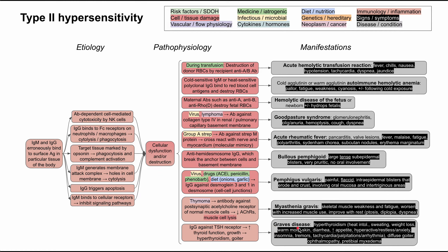Graves' disease is another type 2 hypersensitivity reaction. In this case, you have IgGs against the TSH receptor, which actually stimulates thyroid function and can cause thyroid growth. The result is hyperthyroidism and goiter. Symptoms of hyperthyroidism include heat intolerance, sweating, weight loss, warm moist skin, diarrhea, increased appetite, restlessness, anxiety, insomnia, tremors, tachycardia, palpitations, and arrhythmia. Findings more specific to Graves' disease include diffuse goiter, ophthalmopathy, and pretibial myxedema — a swelling over the shins caused by the antibodies.